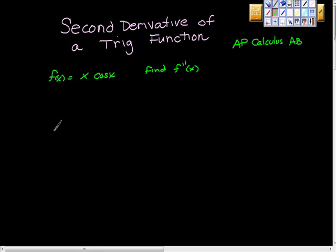Given that f of x is equal to x cosine x, find f double prime at x, otherwise known as the second derivative.